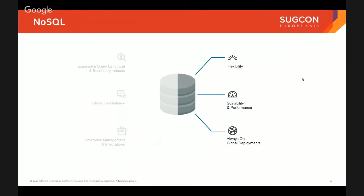However, NoSQL made a lot of sacrifices to get what we wanted. Most NoSQL systems are what we call key-value stores — you get a single index on which to search your data. So if you want to look at all users that are logged in, then look at the times they logged in, then look at the number of times they clicked on a page — you get to pick only one of those to search efficiently.